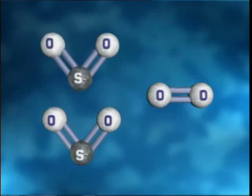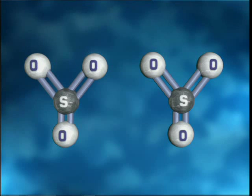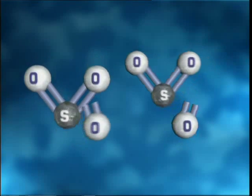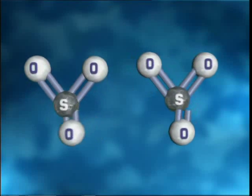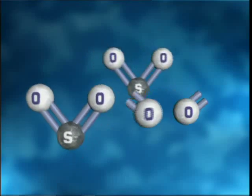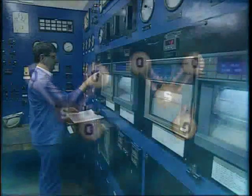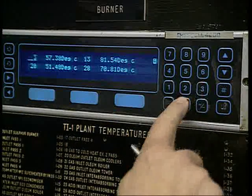But as the temperature rises, the sulphur trioxide tends to break back down into sulphur dioxide and oxygen. Unfortunately, it's a reversible reaction. It can go forwards and backwards. So, at the production plant, they make sure that the reactor doesn't get too hot.